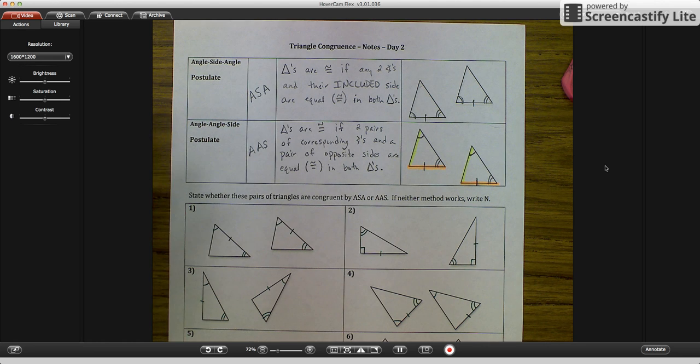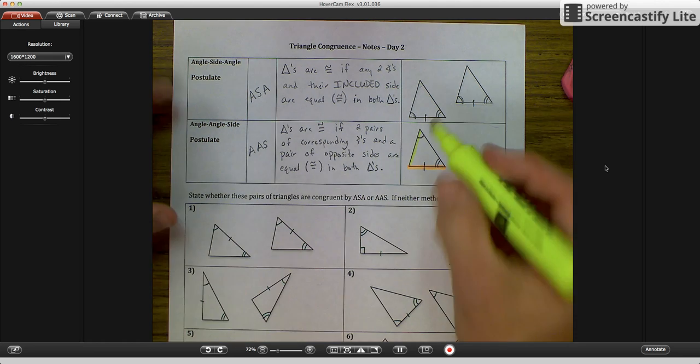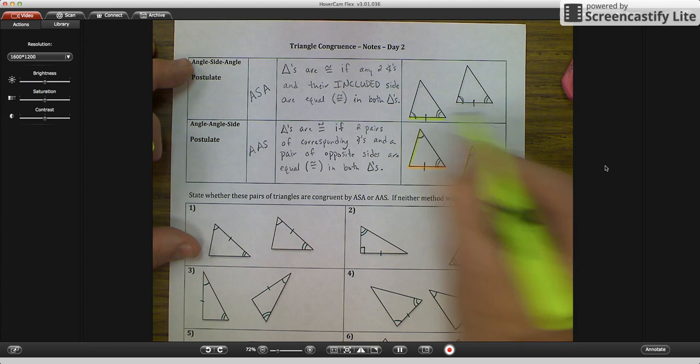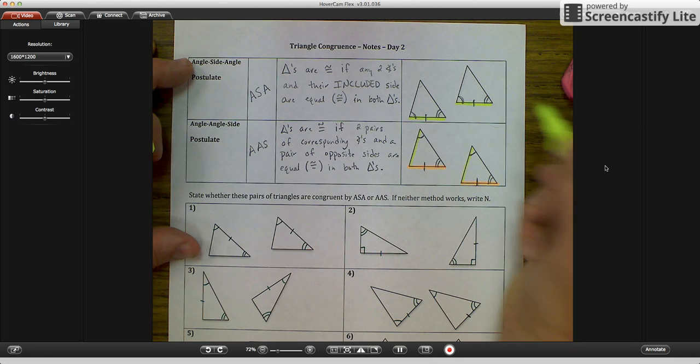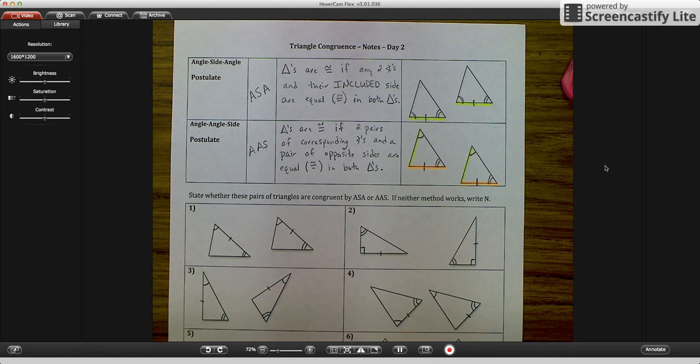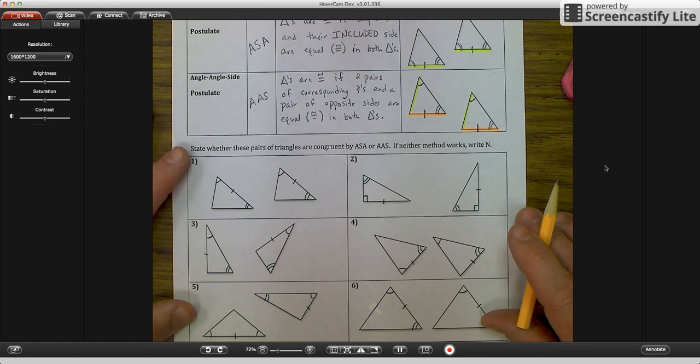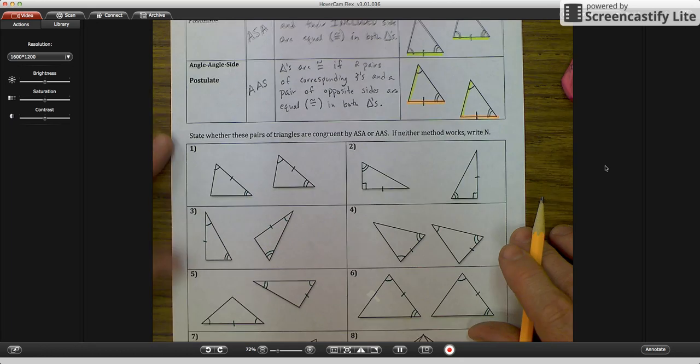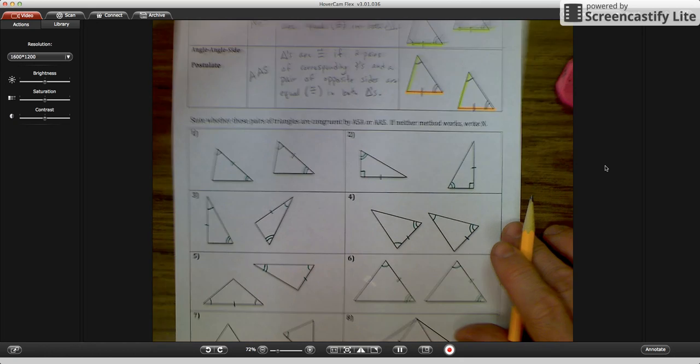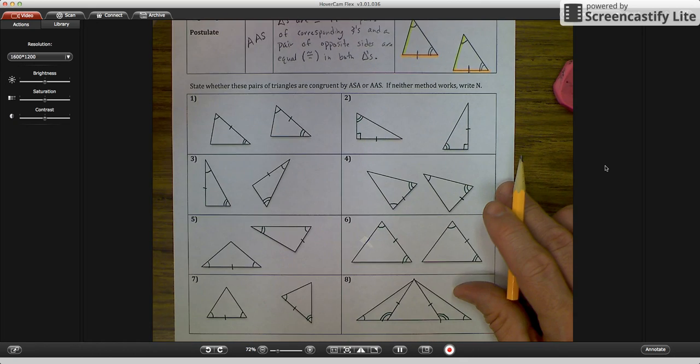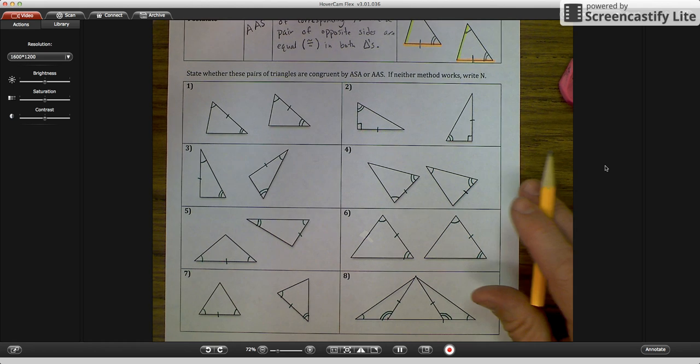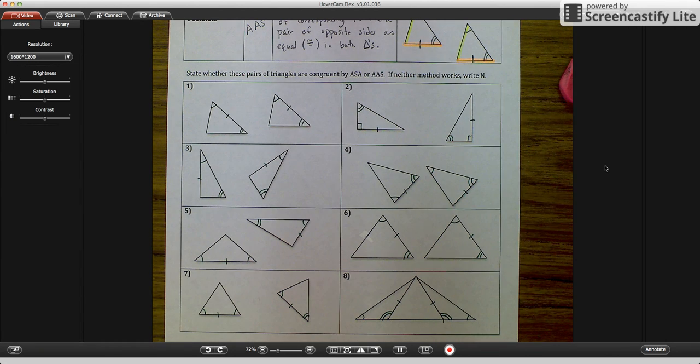Let me actually highlight up here the included side. There we go, included side. All right, let's go down to some of our triangle pairs down here. We're going to do some practice. You have the postulates in front of you, so I'm going to slide all the way down so that you can see all eight. On your paper, you do not have these markings. So please pause your computer right now and put these markings on your paper.